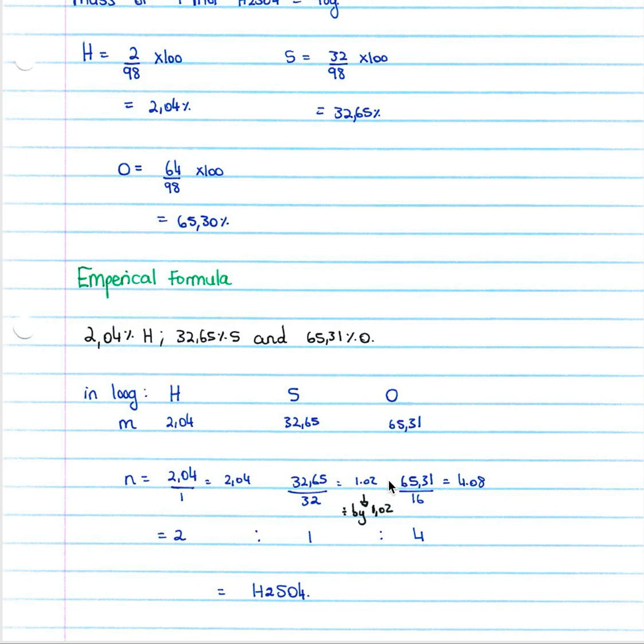We divide by our smallest to get a ratio of 1, so we divide by 1.02 to get 1. We divide 2.04 by 1.02 to get 2, 4.08 divided by 1.02 to get 4. And therefore our empirical formula gives us a ratio of 1 to 2 to 4. Therefore we know it's H2 because we have 2 in our ratio.